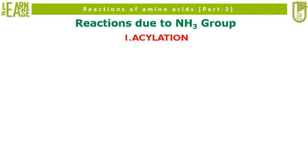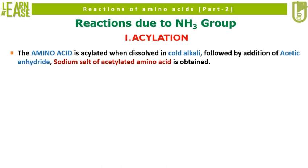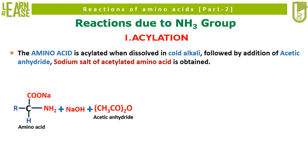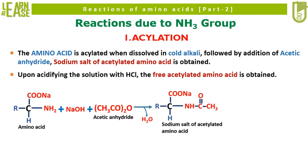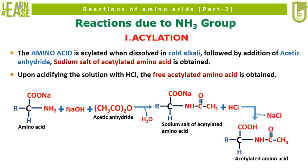The amino acid is acylated when dissolved in cold alkali followed by addition of acetic anhydride. Sodium salt of acetylated amino acid is obtained. Upon acidifying the solution with HCl, the free acetylated amino acid is obtained. Carefully see the complete set of reactions occurring to understand the mechanics of the acylation reaction of amino acid.